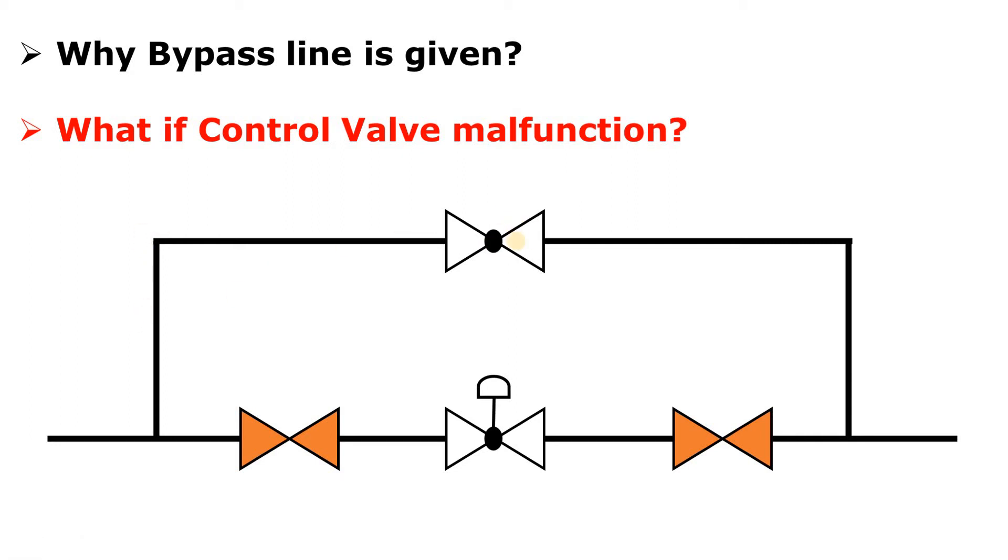This one is my globe valve. And why here is the globe valve? Because we want to regulate the flow. Why do we use the globe valve? Because in the globe valve, the direction of the flowing fluid changes three times.